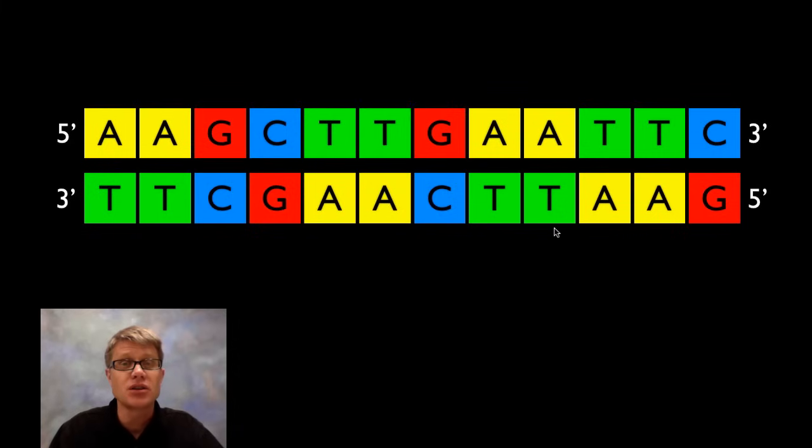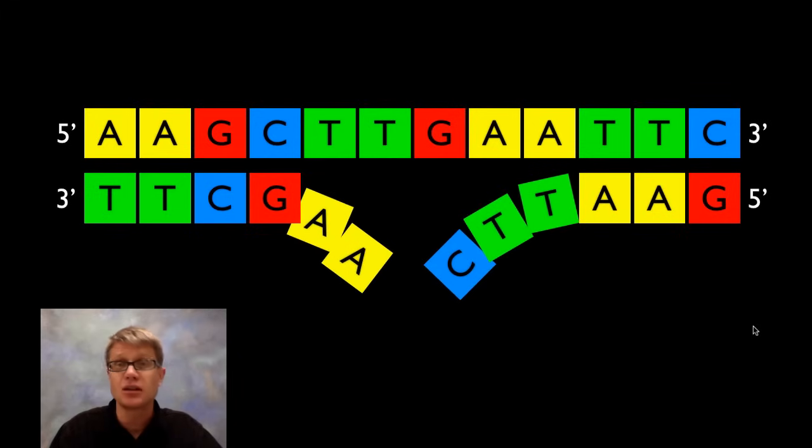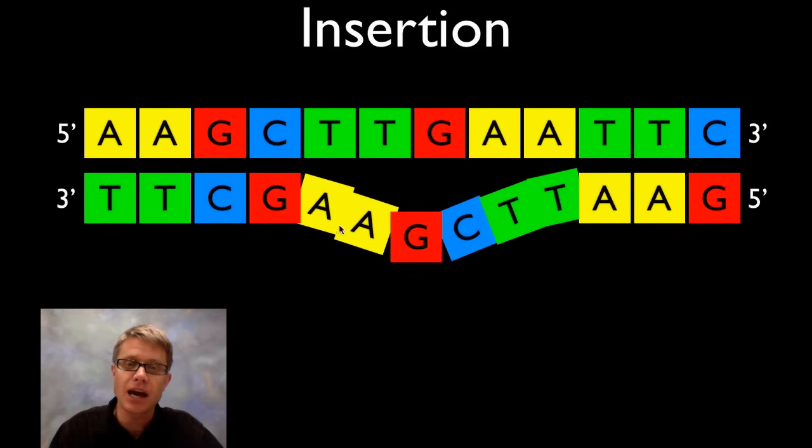We could also have radiation or chemicals causing the DNA to break apart. We have proteins that can fix that as well, but sometimes when they fix it they'll actually add a new letter. This strand is totally fine, but now we've added this new letter here. When this cell replicates, this strand is now going to have an extra letter in it, and that could shift all the letters over and screw up the whole protein.